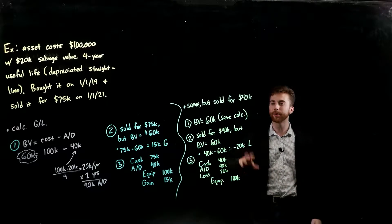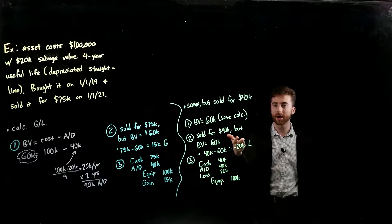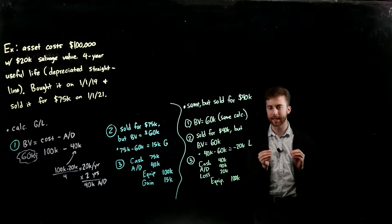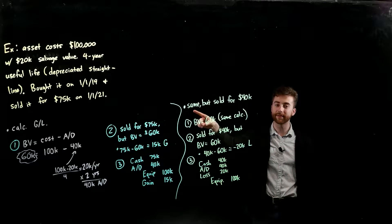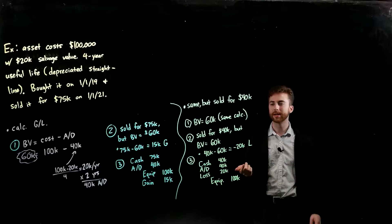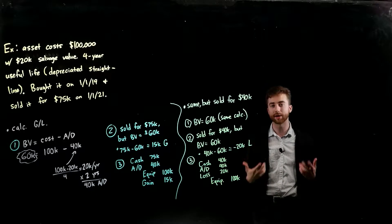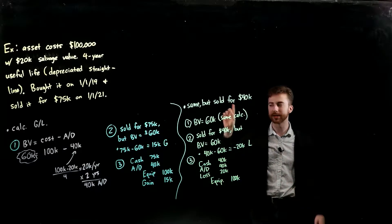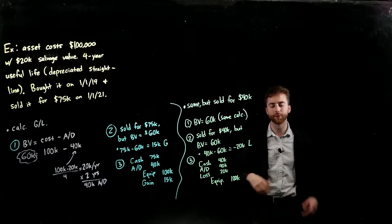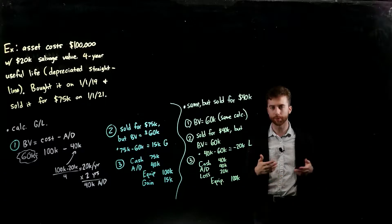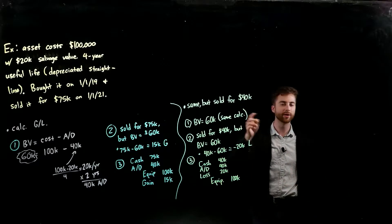We're going to do the exact same thing for a loss example, where we're going to use all the same information but we're just changing the selling price to instead of it being $75,000, it's now $40,000. So we're going to go through the exact same steps. For number one, we just need to find what is our book value - it's just that $60,000. It's the exact same calculation from before to see what your cost is, subtract out your accumulated depreciation which you'll probably have to calculate, subtract the two and you get your book value.